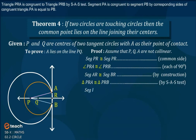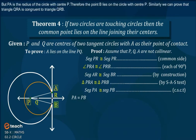Now, segment PA is congruent to segment PB by corresponding sides of congruent triangles. PA is equal to PB. But PA is the radius of the circle with center P. Therefore, the point B lies on the circle with center P.